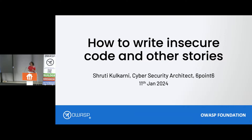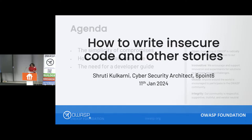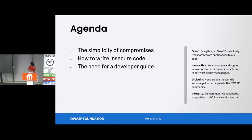I just want to tell how sometimes architects get caught between developers and InfoSec guys while trying to solve problems, and we see things from both sides. This is the agenda for today: how simple sometimes compromises can be, how to write insecure code, and the need for a developer guide.